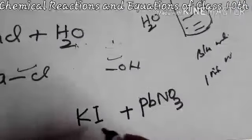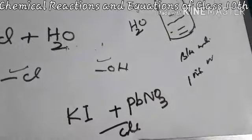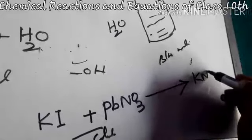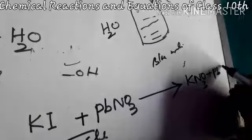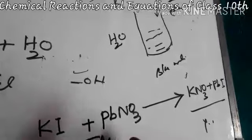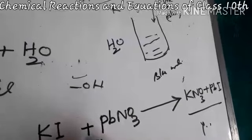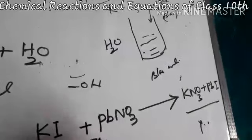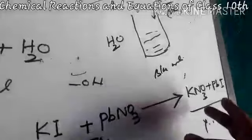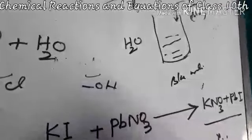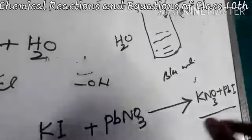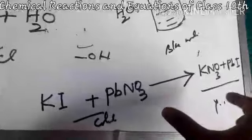When KI and Pb(NO3)2, which are colorless, react with each other, they form potassium nitrate and lead iodide. These are yellowish. Initially, no color was present, but when these react to each other, they form a yellowish product - a mixture of KNO3 plus PbI2, potassium nitrate and lead iodide. So we can say that this is a chemical change.